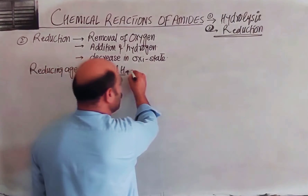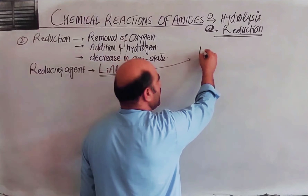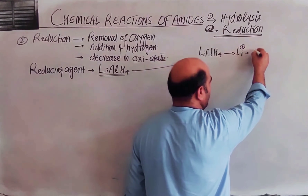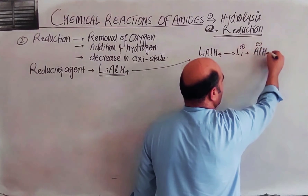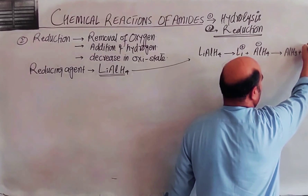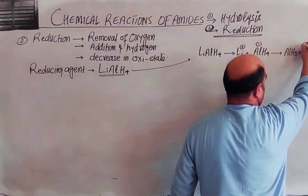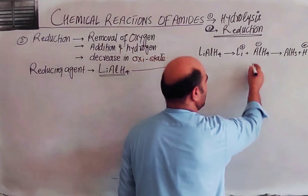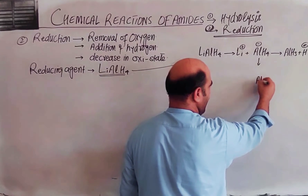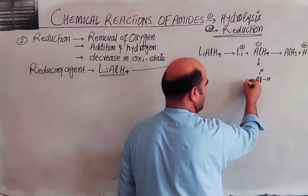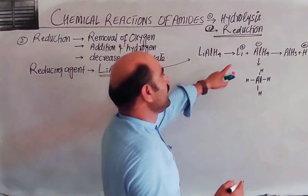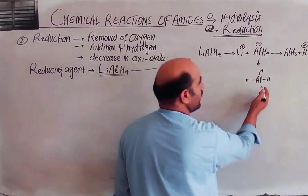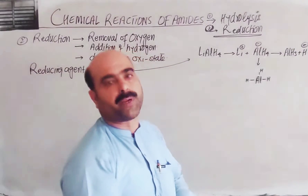Lithium aluminum hydride is a complex hydride. It is written as LiAlH4 — lithium aluminum hydride, where the aluminum hydride part is AlH4 with a negative charge.